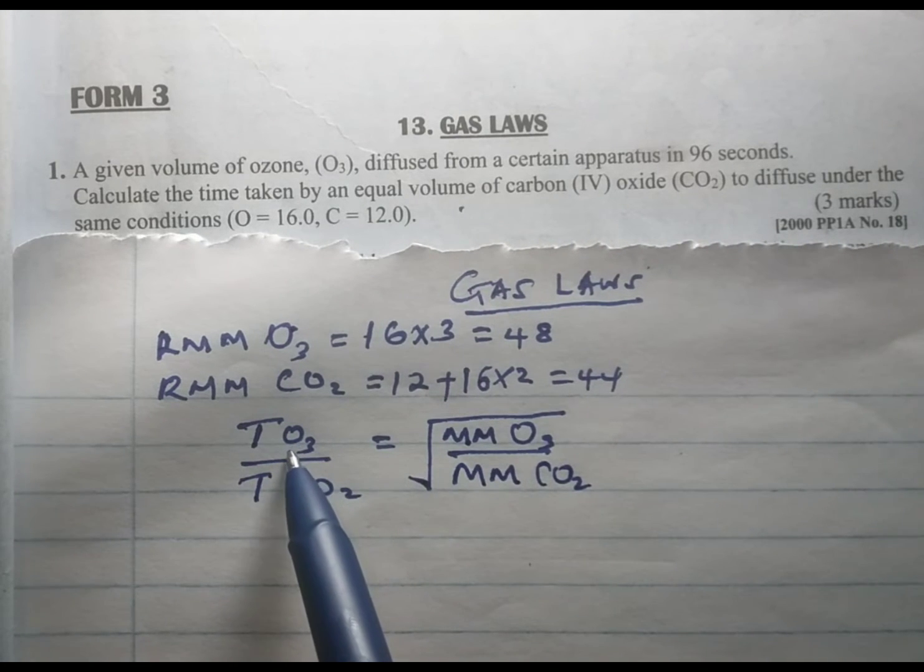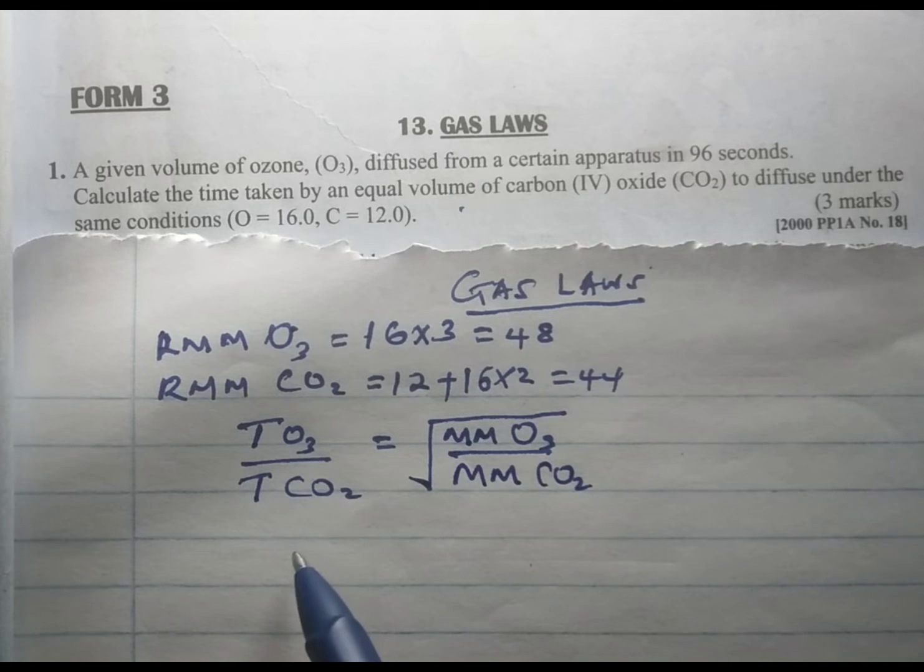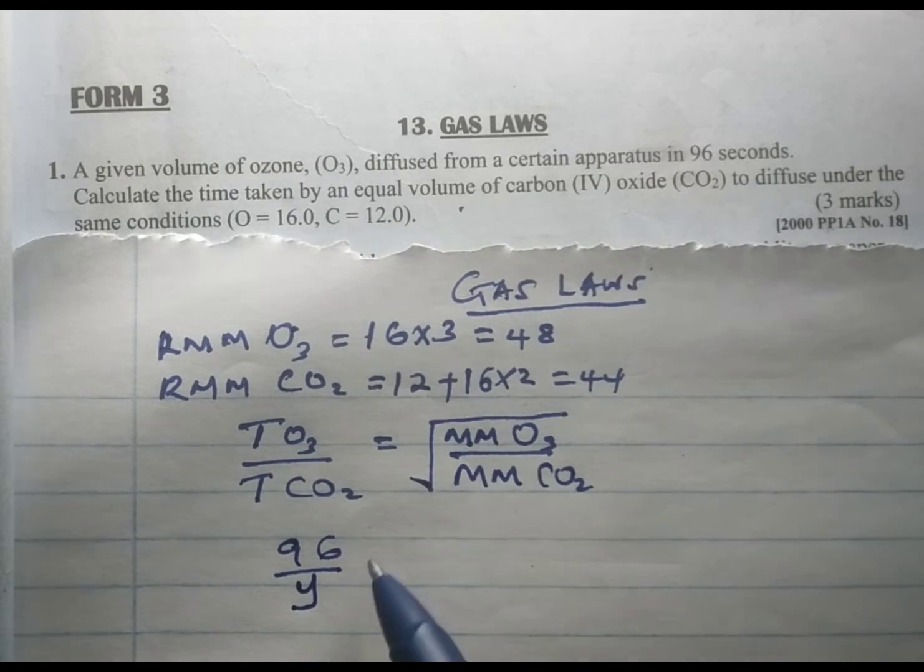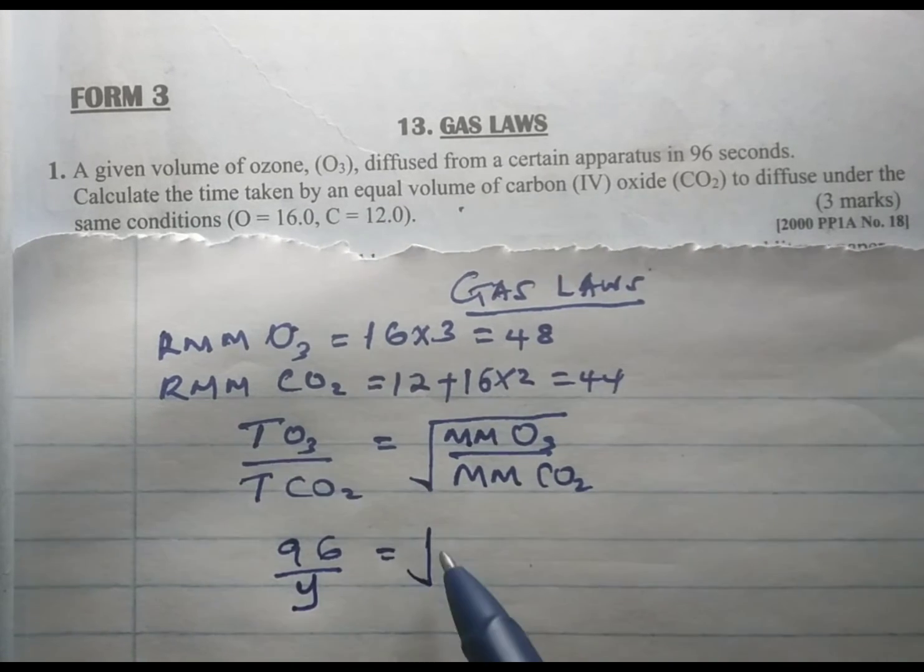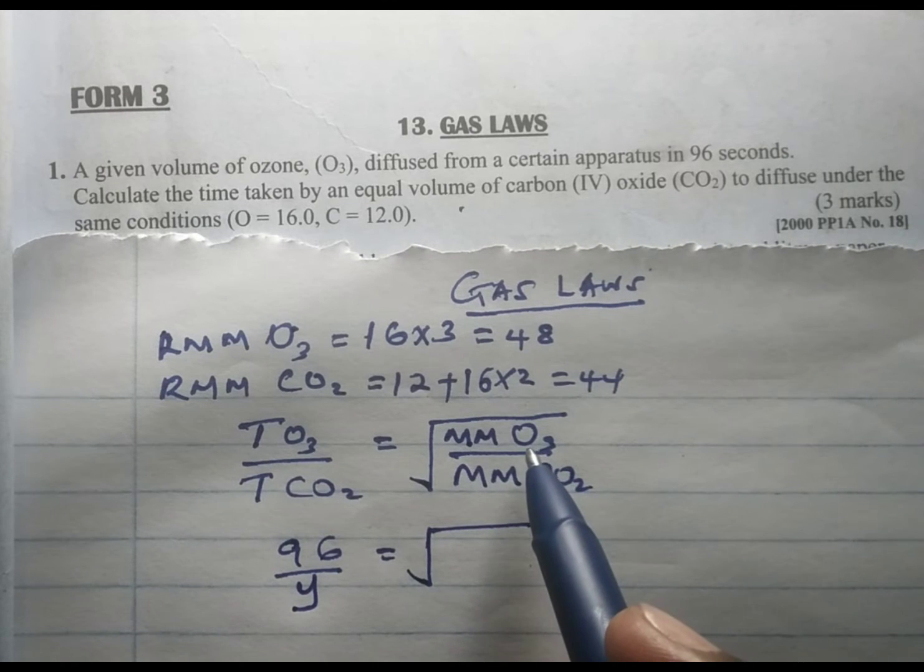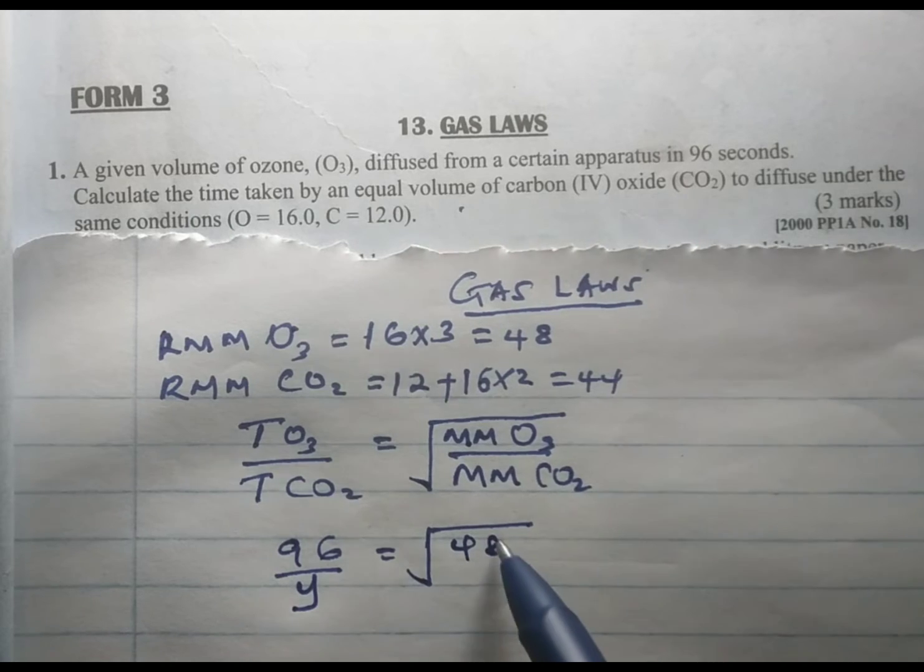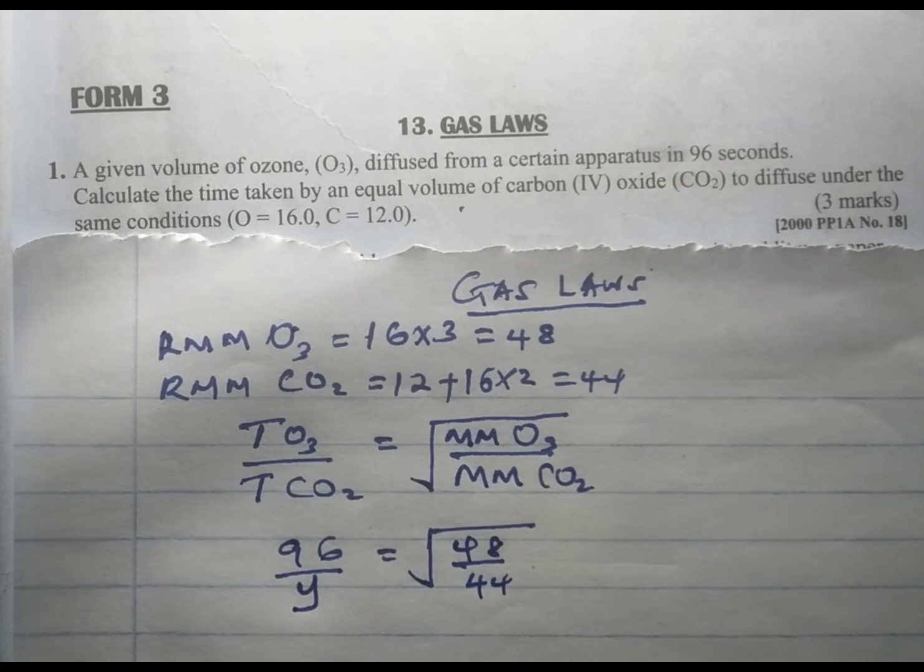We have been given the time of ozone as 96. You divide by the time of carbon dioxide which we don't know, and this one is going to be equal to the square root of the molecular mass of ozone, which is 48, divided by that of carbon dioxide which is 44.